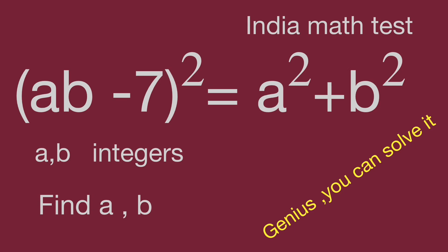(ab - 7)² = a² + b². AB are integers. Find the value for A and B.